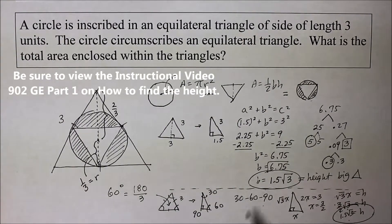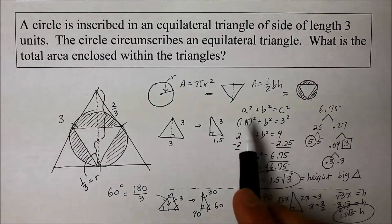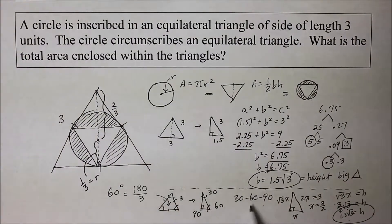All right, so we found the height of the big triangle, either by using the Pythagorean Theorem or the 30-60-90 ratio.